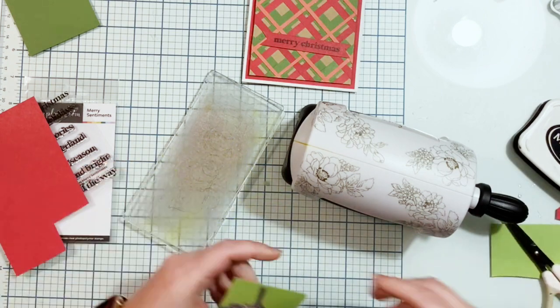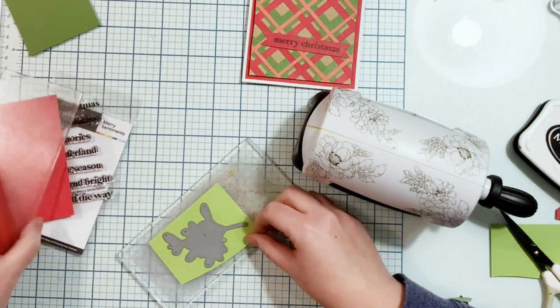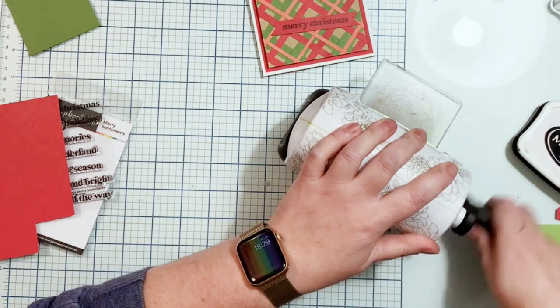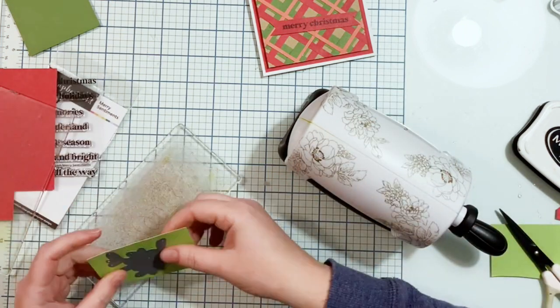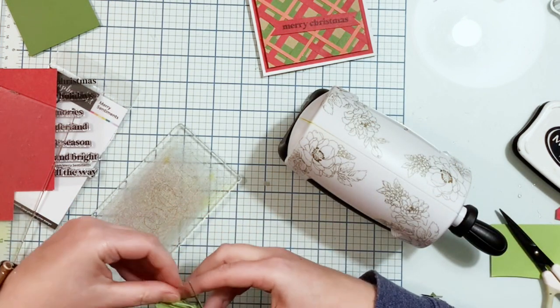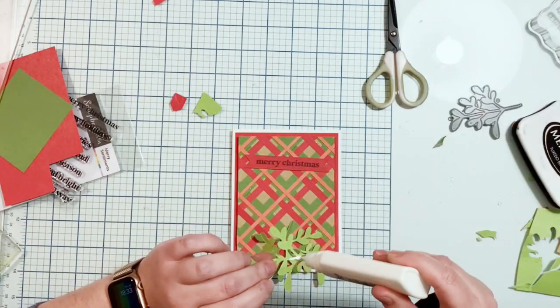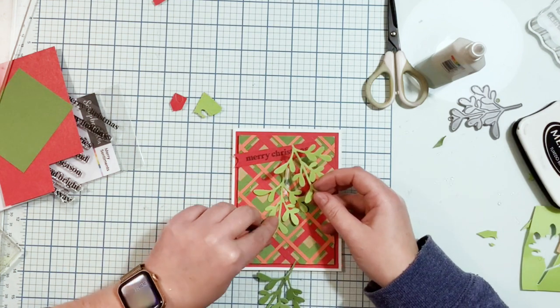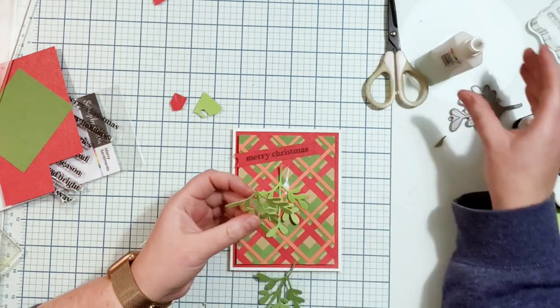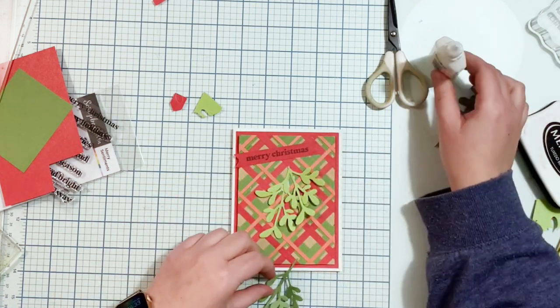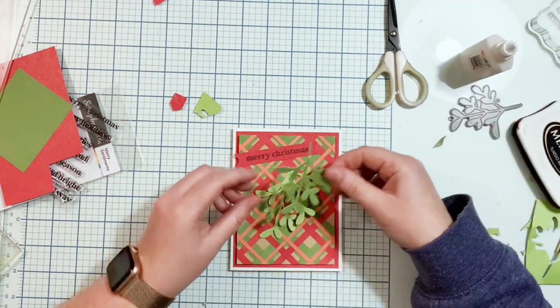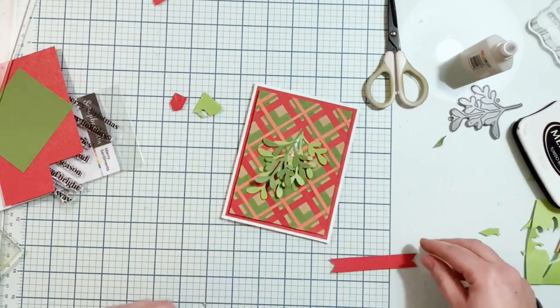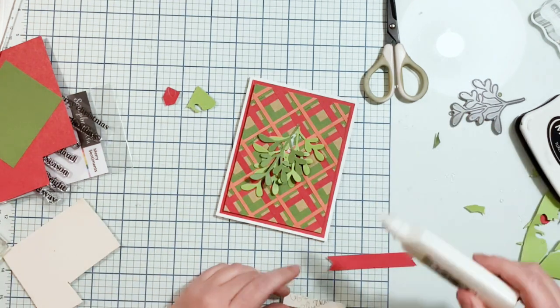I have my Merry Christmas done and I need something more to embellish my card. I took this mistletoe leaves die—honestly I don't remember the brand. I think it's the first or second time I'm using it on a card. I took the same paper pads to cut those leaves three times: two times with lighter green and one time with the same green I used to make my plaid. I glued it down all together creating one bigger cluster.